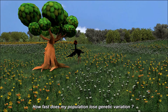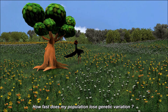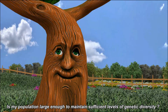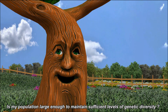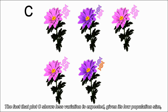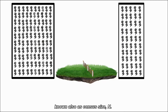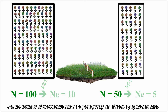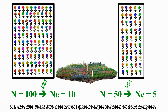How fast does my population lose genetic variation? Is my population large enough to maintain sufficient levels of genetic diversity? The fact that plot C shows less variation is expected given its low population size, known also as census size, N. So the number of individuals can be a good proxy for effective population size, NE, which also takes into account the genetic aspects based on DNA analyses.